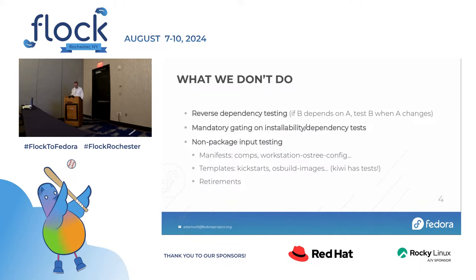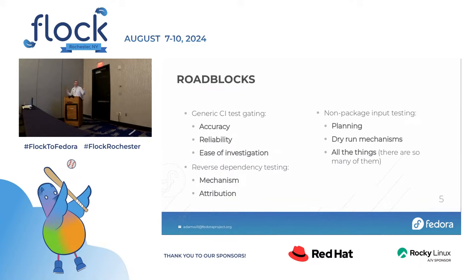Why aren't we doing these things? Roadblocks. For generic CI tests, accuracy is a huge one — sometimes the tests are just wrong. A classic example: your package will fail the installability test if it can't be downgraded, which is dumb because we don't care about that in Fedora. This is especially absurd because if the previous build was broken and you send a fix, that build fails the installability test because the old version can't be installed. So right now we can't gate on that test because the results aren't always correct — and there would be a massive uprising.